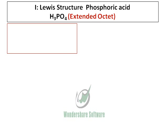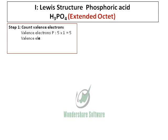By extended octet, it will have more than 8 electrons surrounding it. As usual, we will start by counting the valence electrons. Phosphorus belongs to group 5 and hence has 5 valence electrons. 3 hydrogens give me 3 valence electrons and 4 oxygens give me 24 valence electrons, for a total of 32 valence electrons in phosphoric acid.